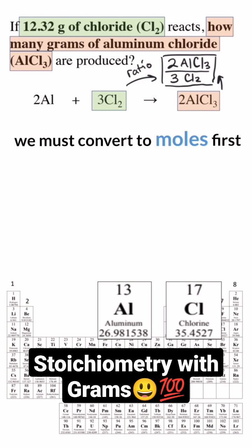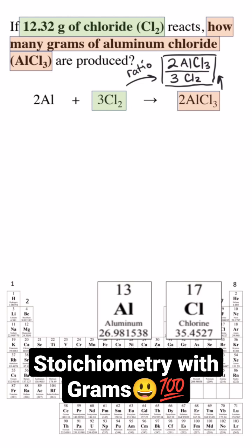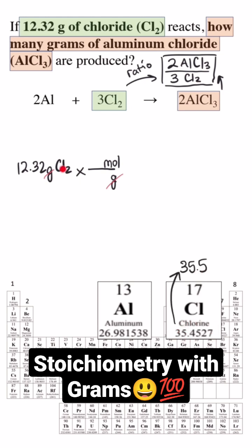so we need to convert the given quantity from grams to moles first. I start with the given value and then use a conversion factor to cancel the unit I don't want by putting it on the bottom of the fraction, and then convert to the new unit by putting it on top. When comparing moles to grams we use the molar mass from the periodic table. I round to one decimal place and then add the two chlorines together to get the mass per mole.